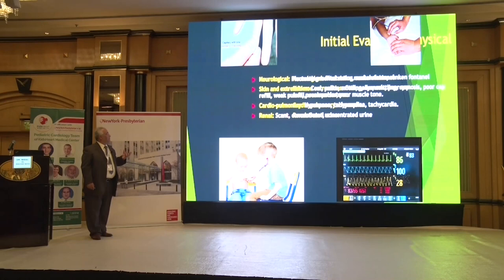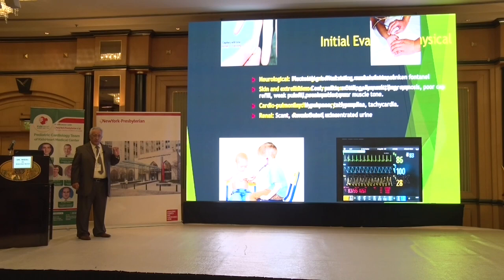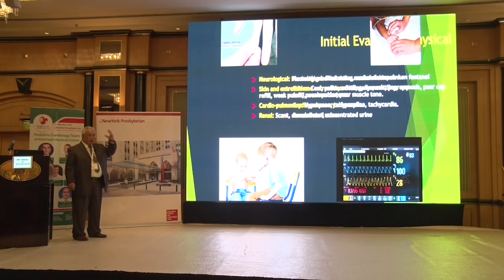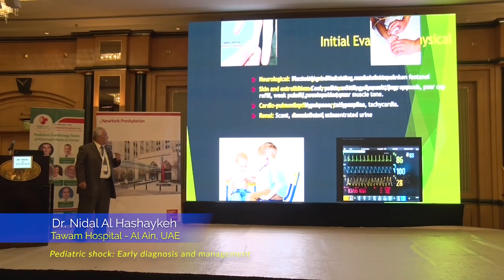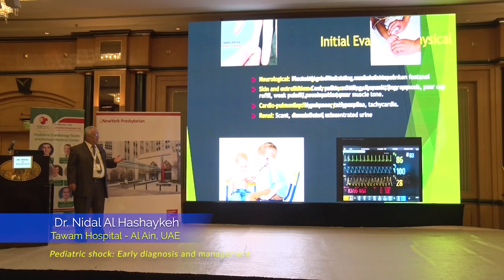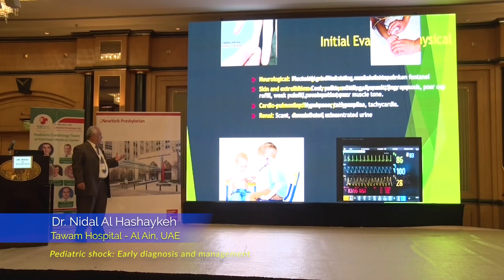You focus on examining the patient, always starting with vital signs. Neurologically, look for fluctuation of level of consciousness, seizures, or bulging anterior fontanelle. The skin is very important — look if it is cool, cold, or cyanotic, indicating poor perfusion and poor pulses. Cardiopulmonary signs include hyperpnea, tachypnea, tachycardia, and weak pulses. Renally, there may be scanty urine, oliguria, or even anuria.